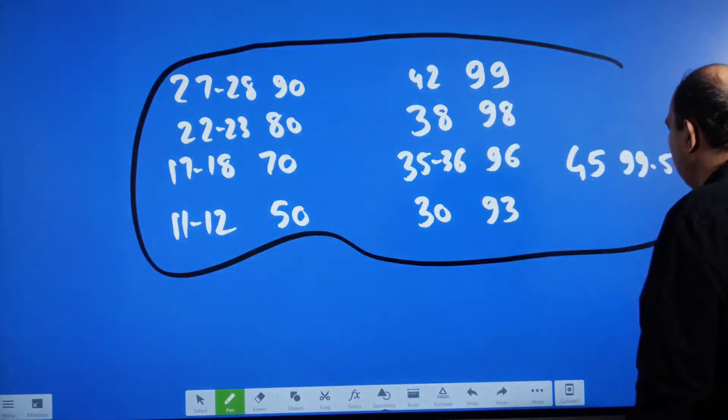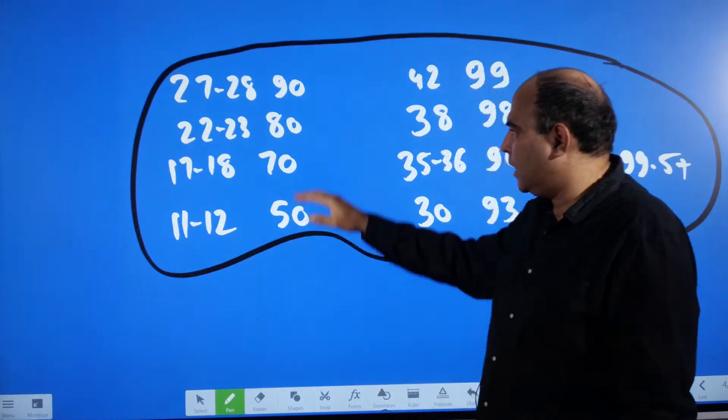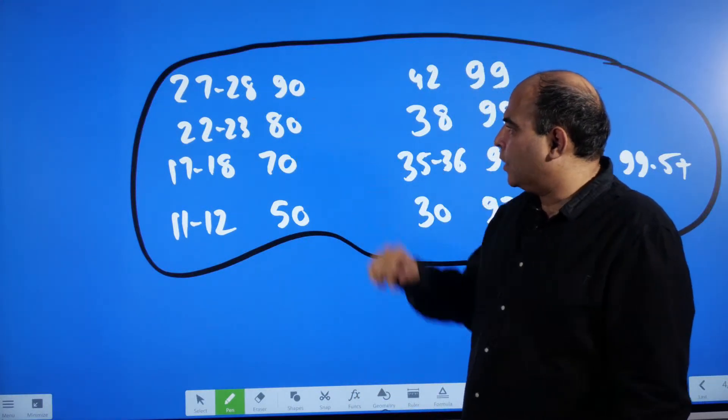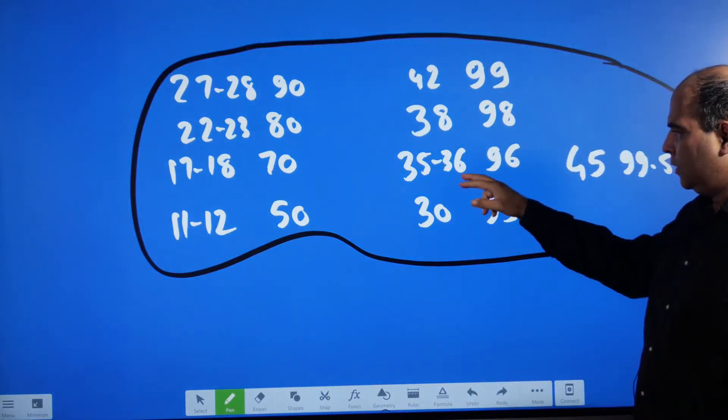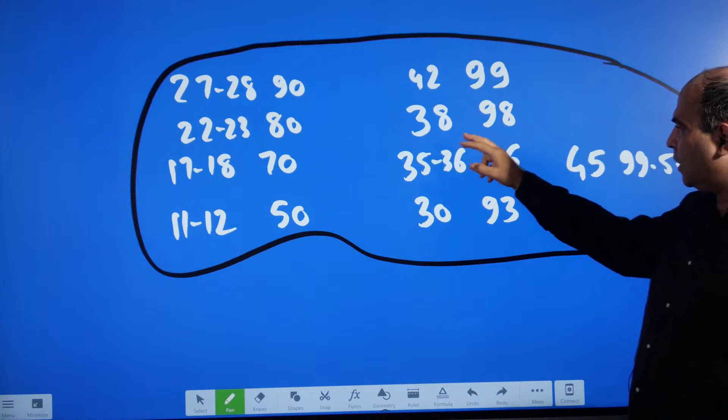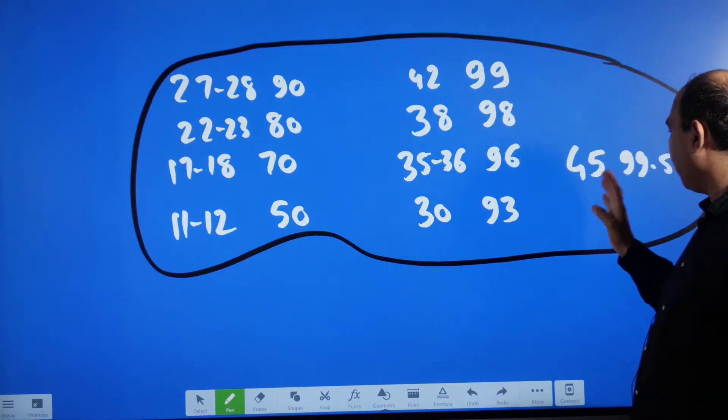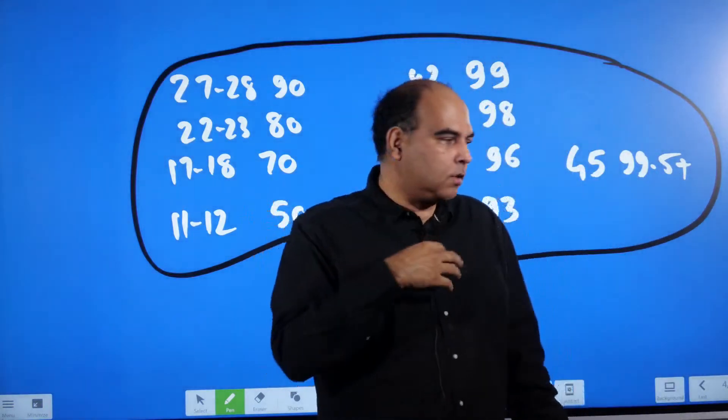So if we look at the verbal section, this is the band analysis for last year: 11-12 marks 50 percentile, 17-18 marks 70 percentile, 20-23 marks 80 percentile, 27-28 marks 90 percentile, 30 marks 93 percentile, 35-36 marks 96 percentile, 38 marks 98 percentile, 42 marks plus 99 percentile and 45 marks plus 99.5 percentile. This is the band.